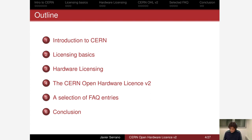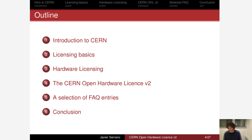In this talk I will start with a bit of context and tell you about CERN very briefly. Then, for those of you who are new to the idea of licensing, I will speak about licensing basics. I will then explain what makes hardware particular as far as licensing is concerned, and what issues one finds when trying to draft a license for hardware. Then I will explain how the CERN Open Hardware License deals with these issues, and then move on to more advanced material: three entries from our frequently asked questions, followed by debate and questions from the audience.